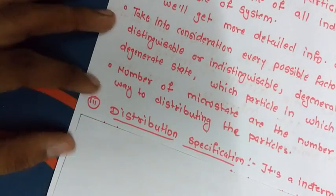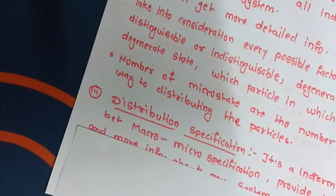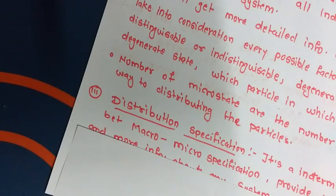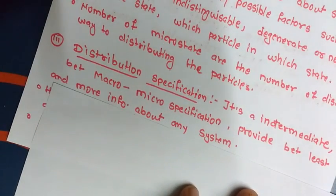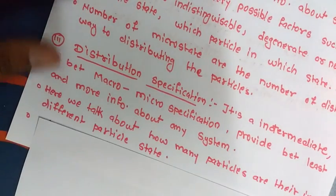Now let's talk about the third: distribution specification. This distribution specification is intermediate between the macrostate and microstate. So the information it gives about a system is more than the macrostate but less than the microstate. Let's see all three specifications by an example — consider the marks of a class of 50 students.